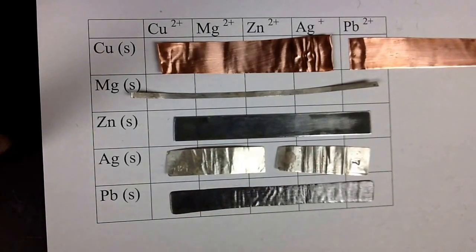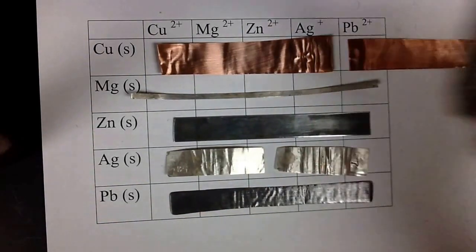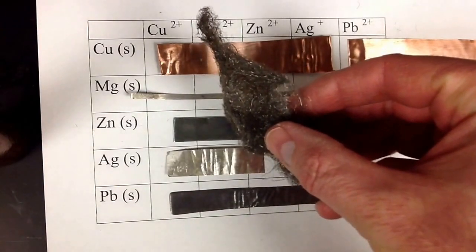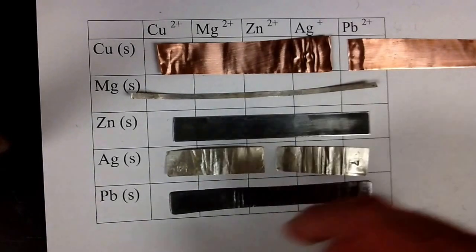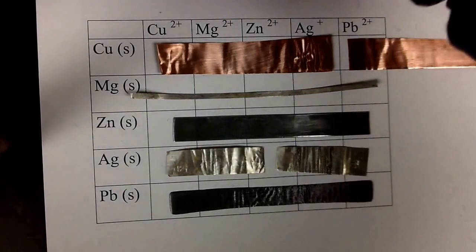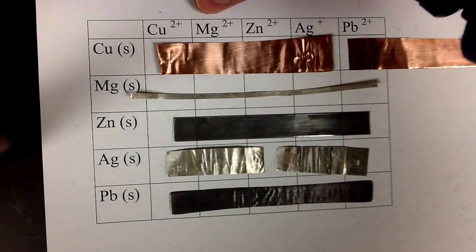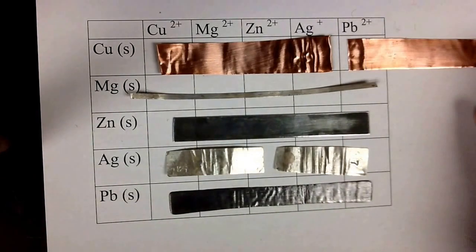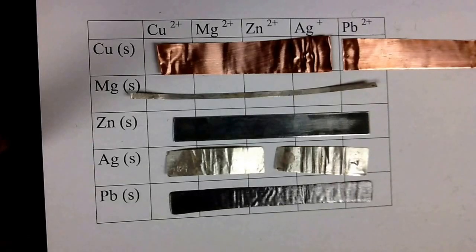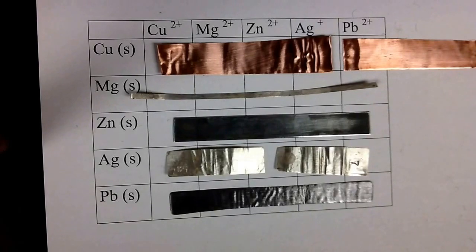And they're nice and shiny because I took some steel wool and I shined them up, got rid of any residue, any corrosion on there, and I'm going to put these solutions. These are all solutions of copper ions, magnesium ions, zinc, silver, and lead ions. And these are all actually solutions of the nitrates, so copper nitrate, magnesium nitrate, and so on.